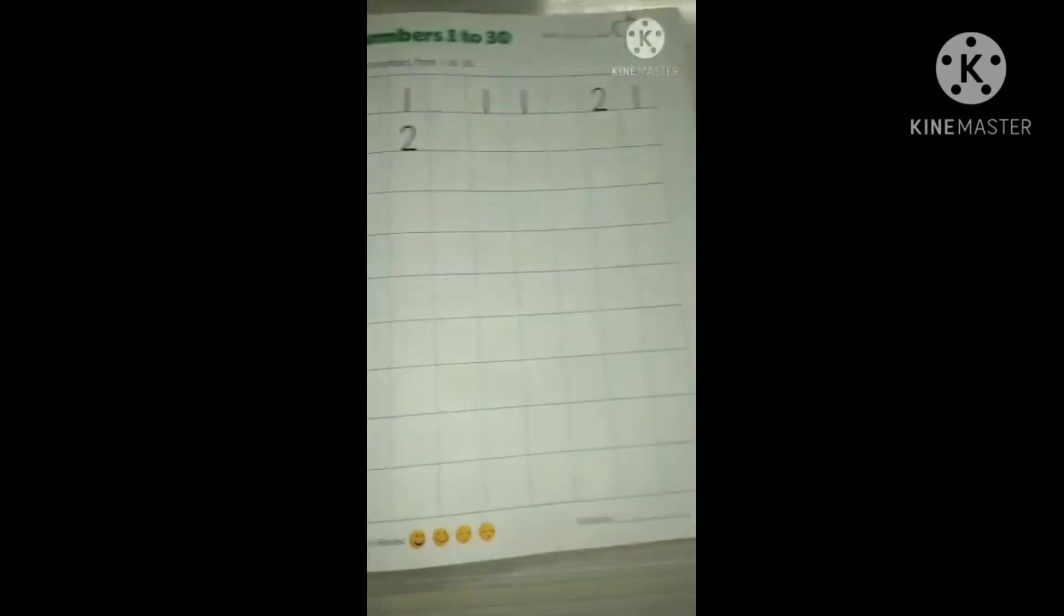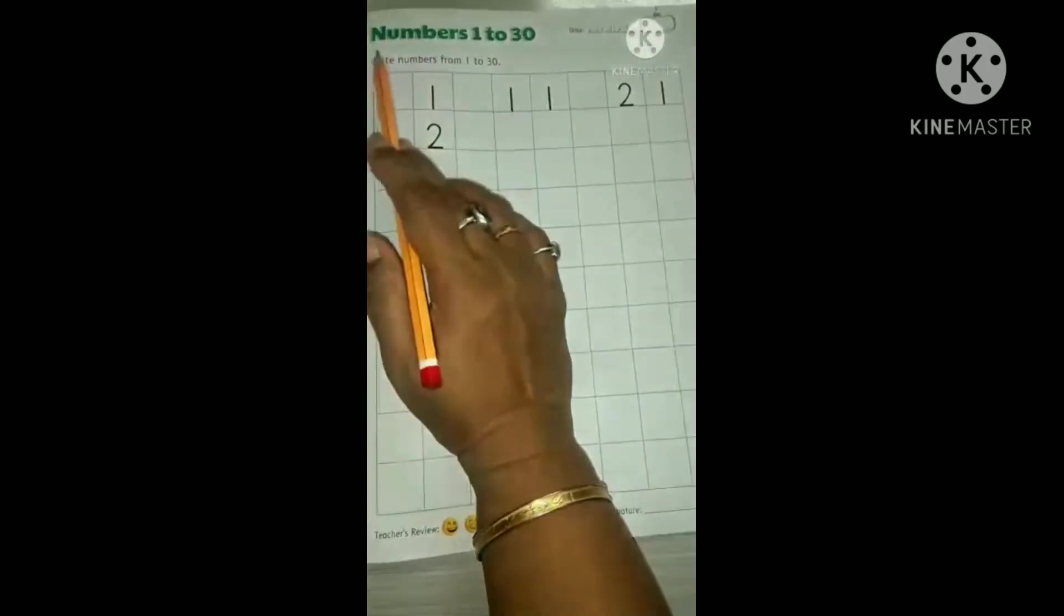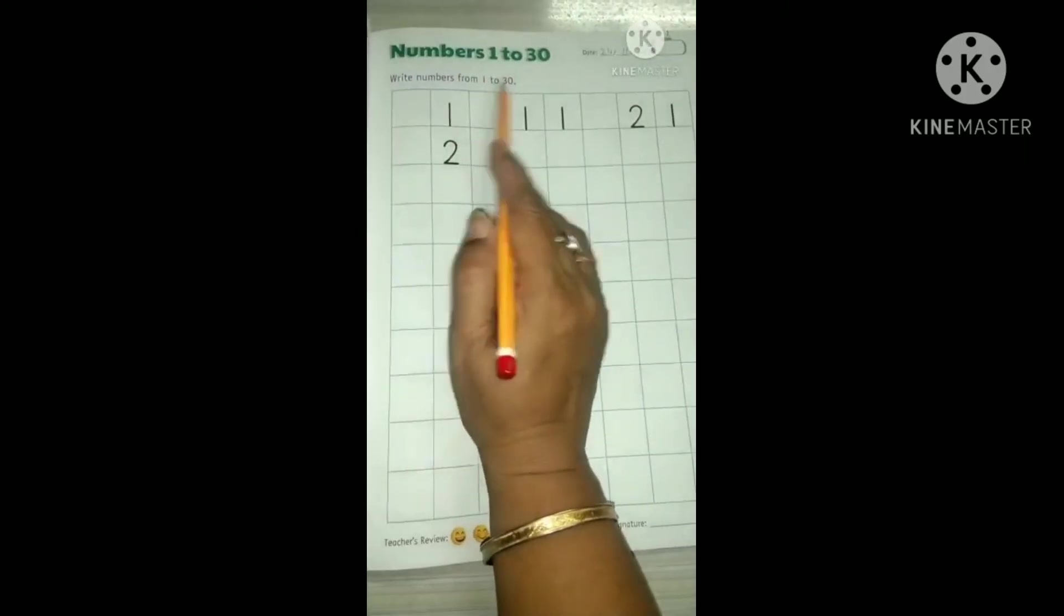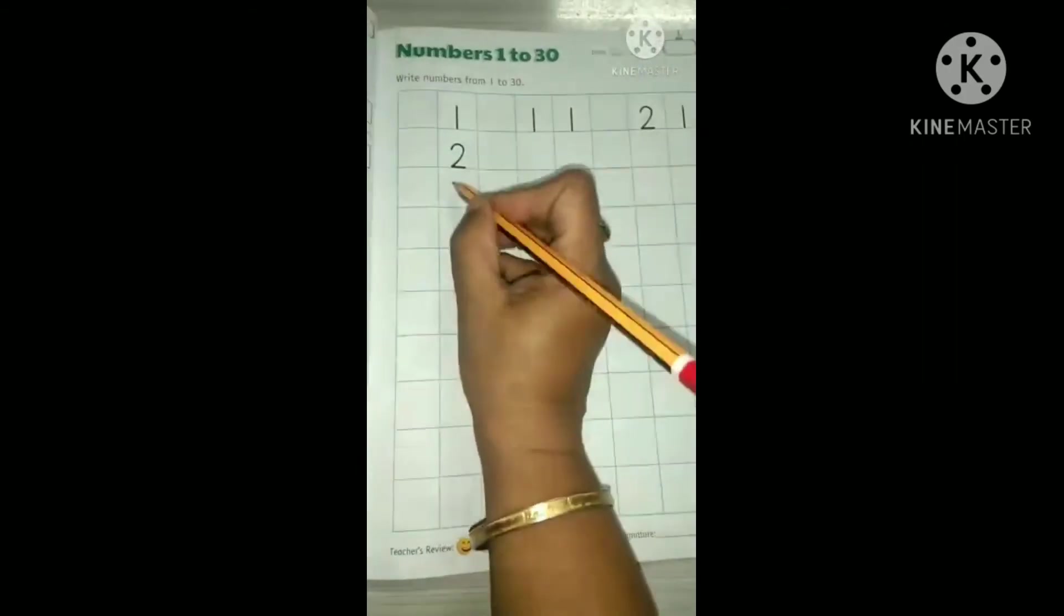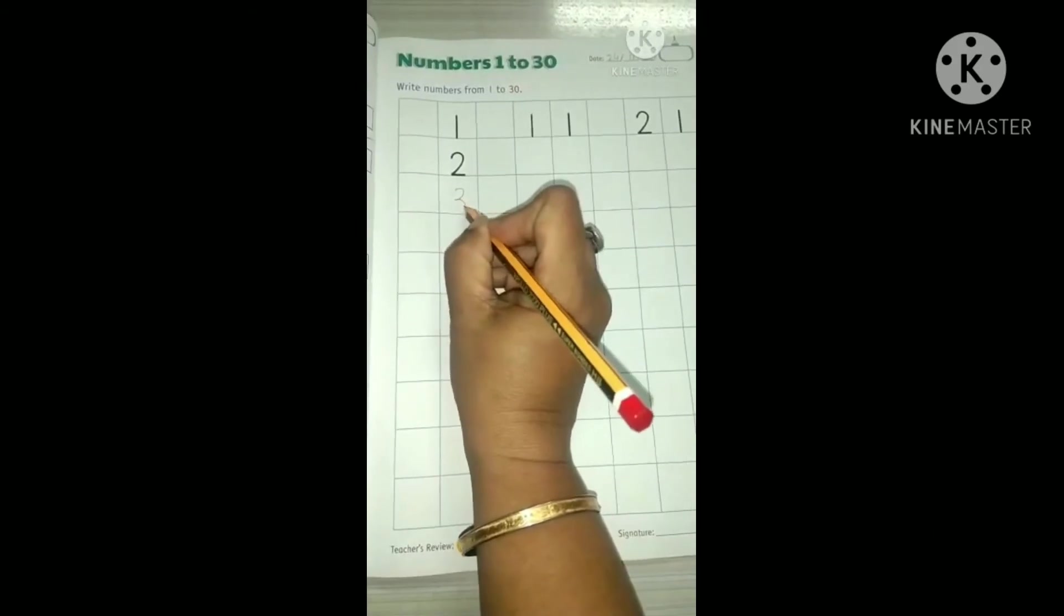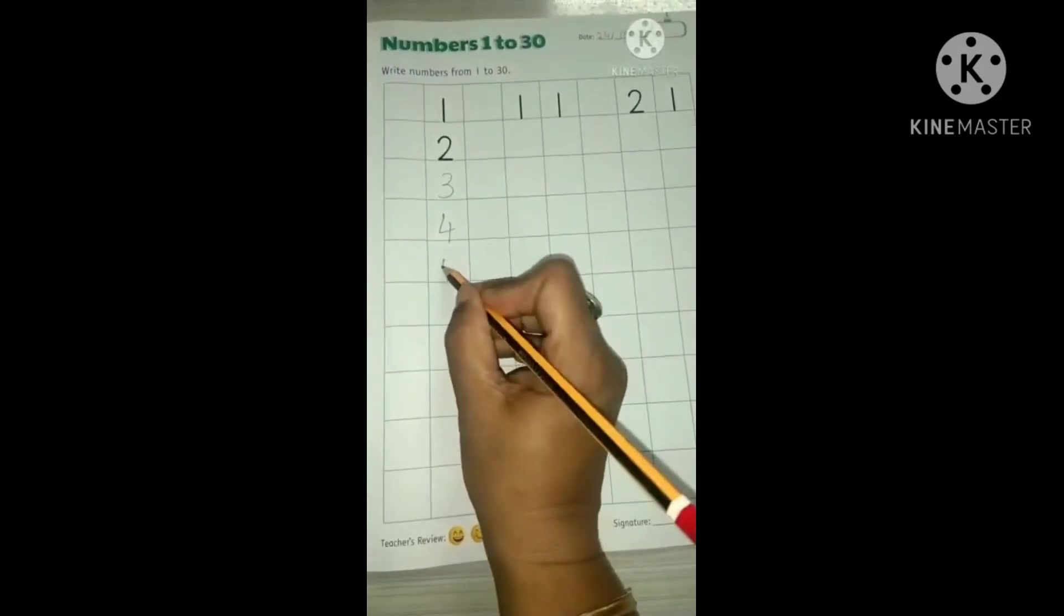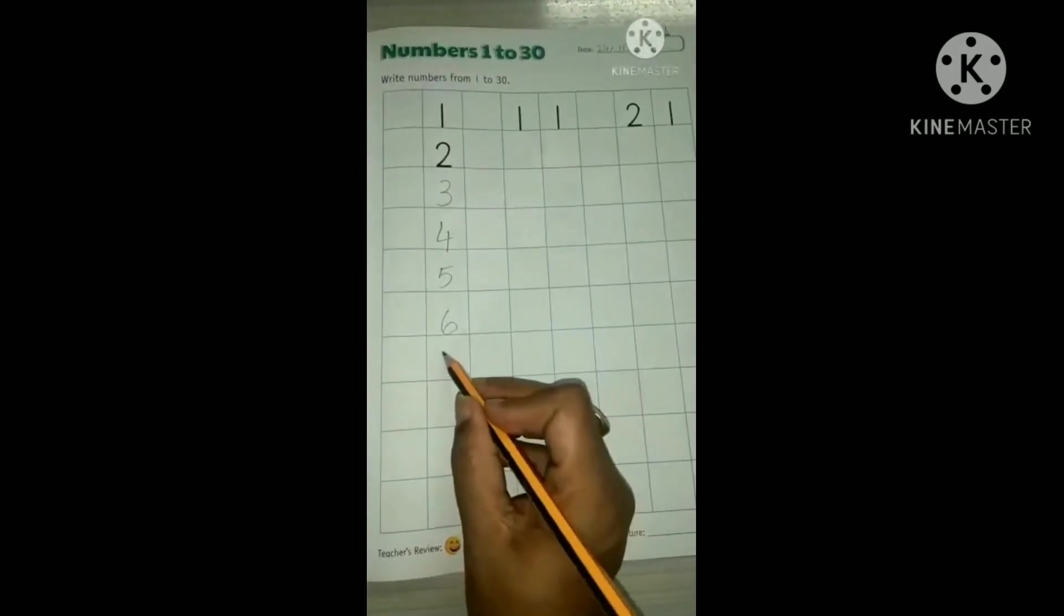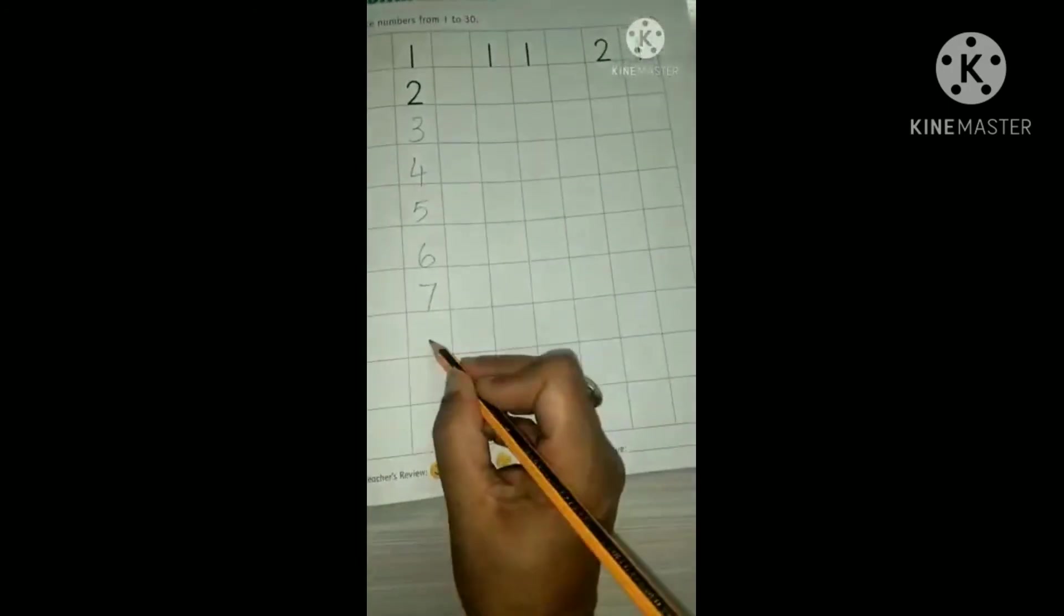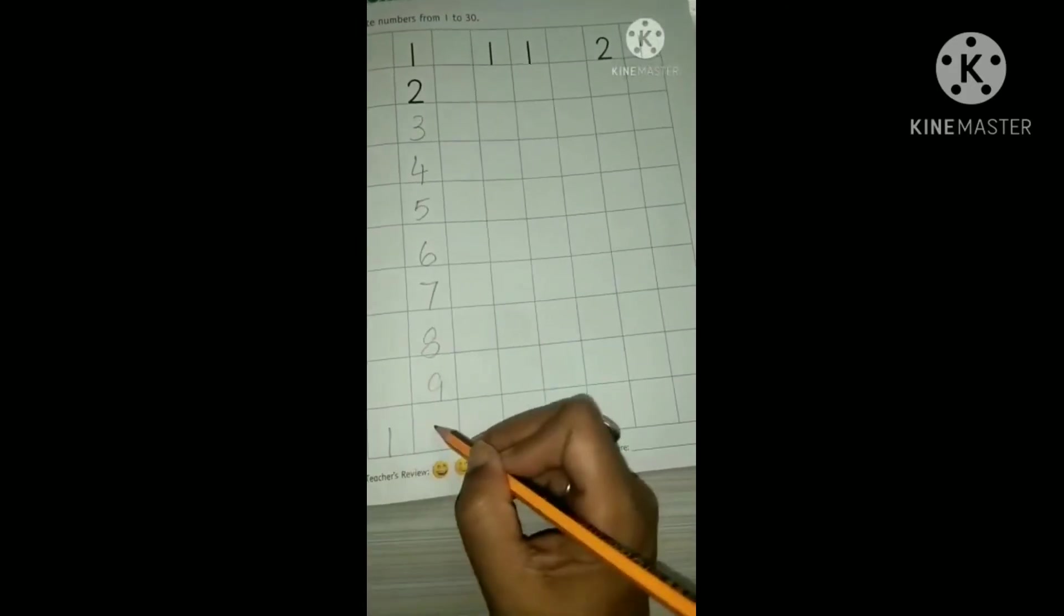Now see on the next page. See, numbers from 1 to 30. Write numbers from 1 to 30. So 1, 2. Now 3, 4, 5, 6, 7, 8, 9, 1, 10.